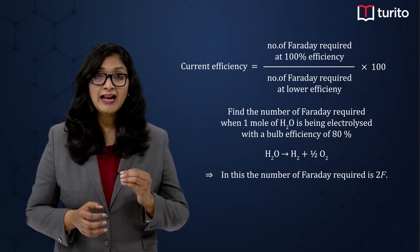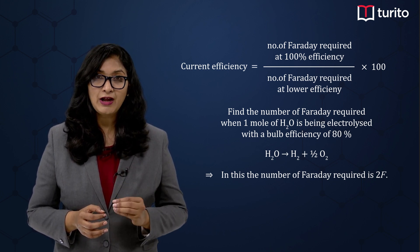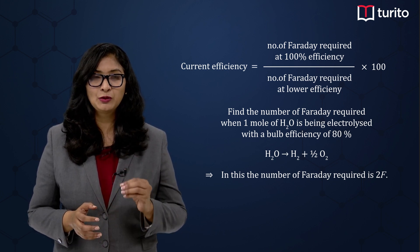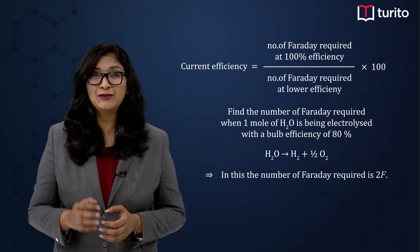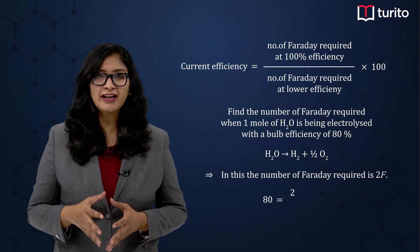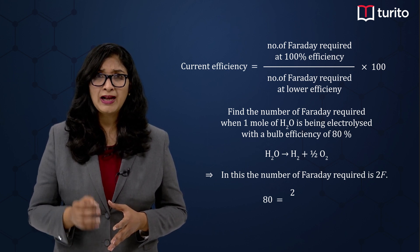So current efficiency is equal to 80%, which is equal to two Faraday, which is the number of Faraday required at 100% efficiency, divided by X, which I am considering as the number of Faraday required at 80% efficiency, times 100.